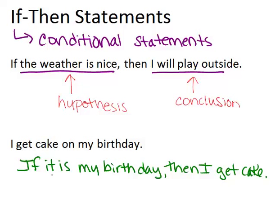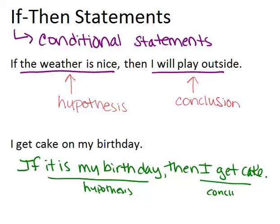In this example, 'it is my birthday' would be the hypothesis, and 'I get cake' would be the conclusion. Something to keep in mind is that the words 'if' and 'then' are not part of the hypothesis or the conclusion. So the conclusion is just 'I get cake,' and the hypothesis is just 'it is my birthday.'